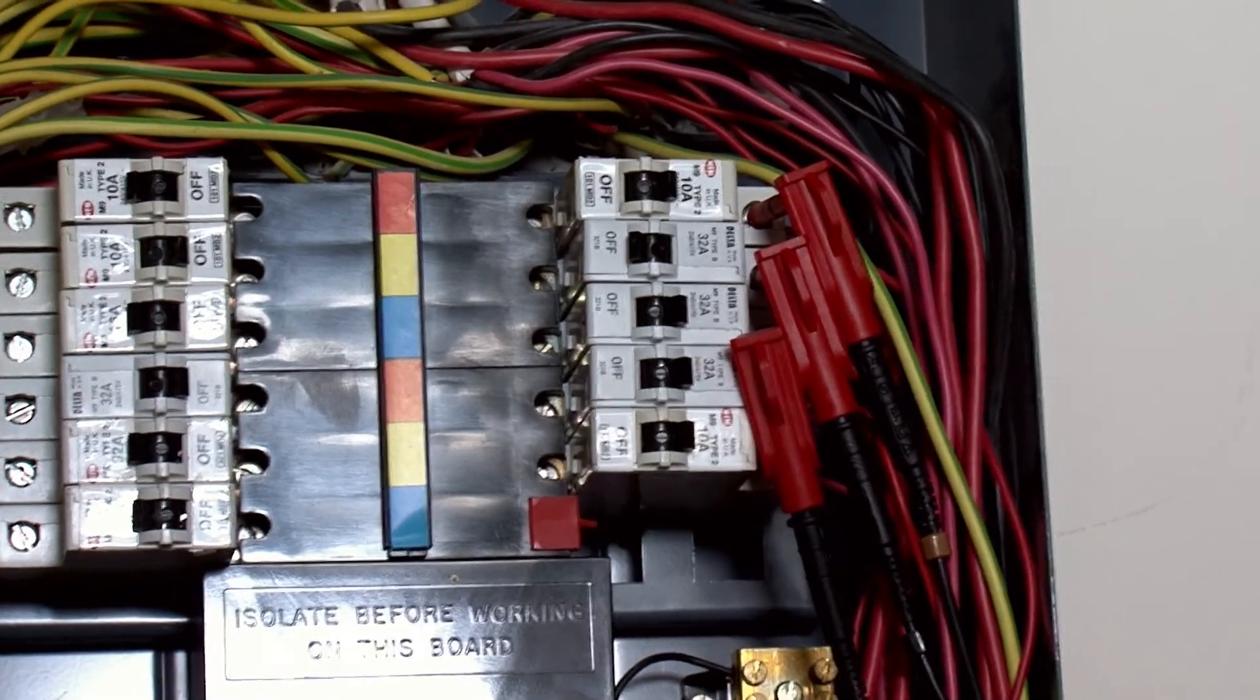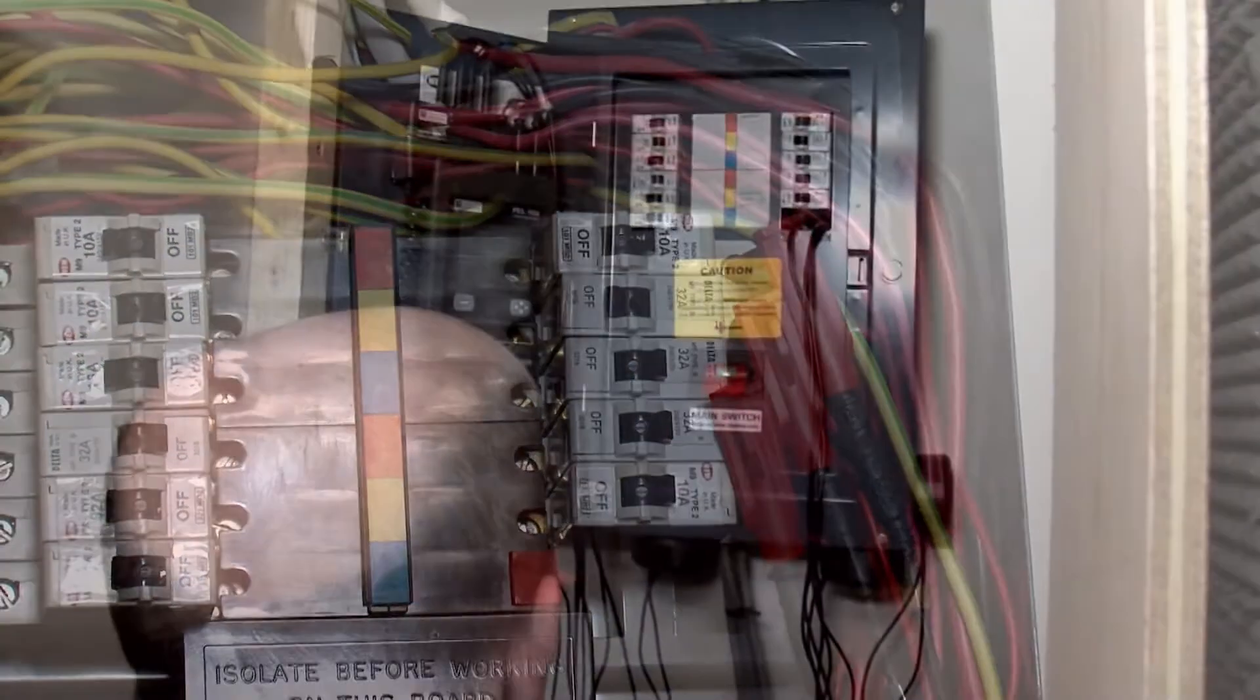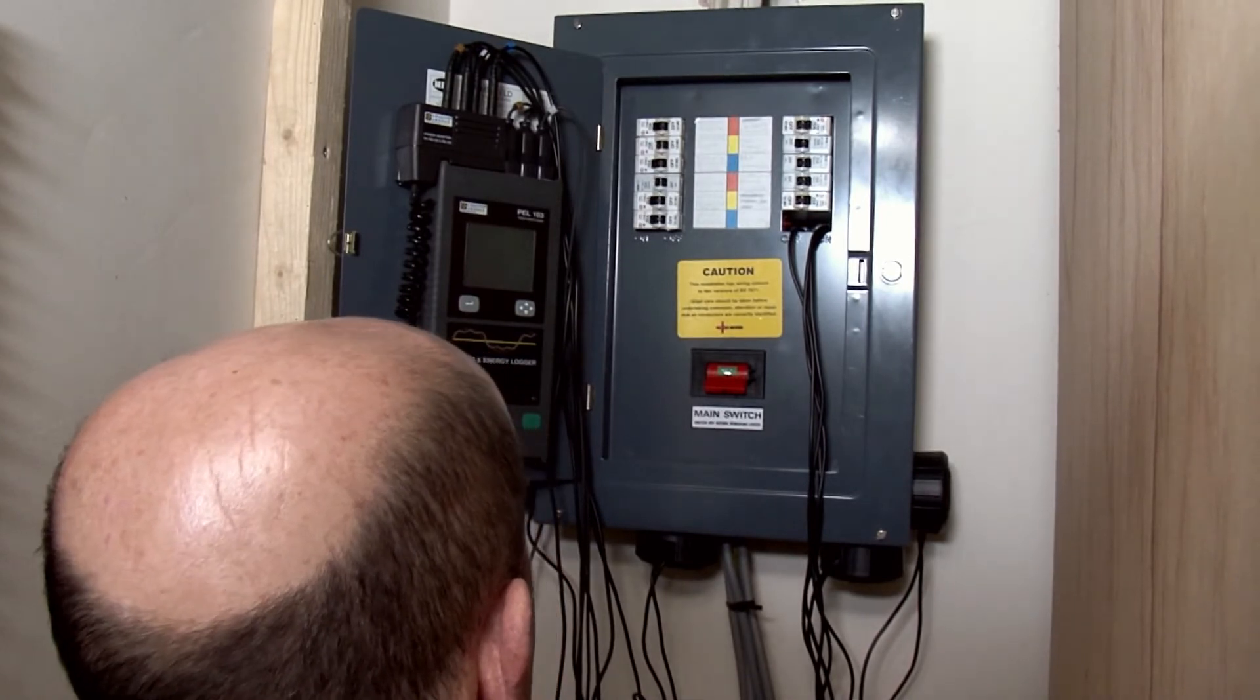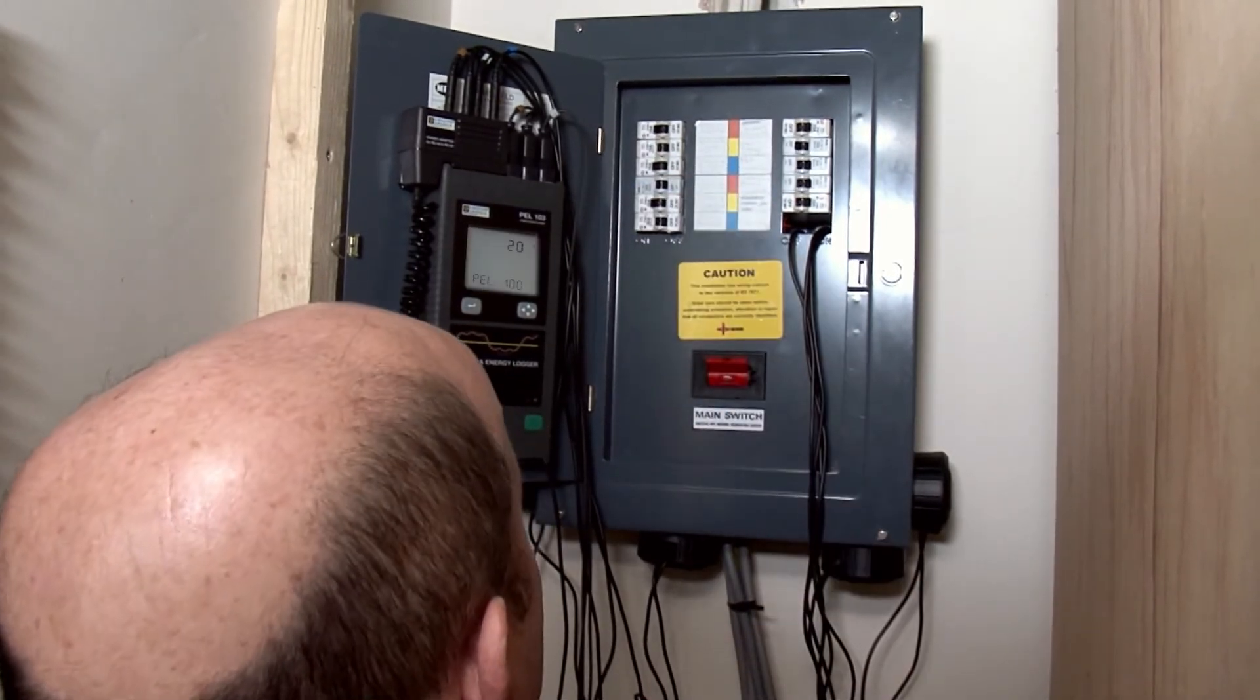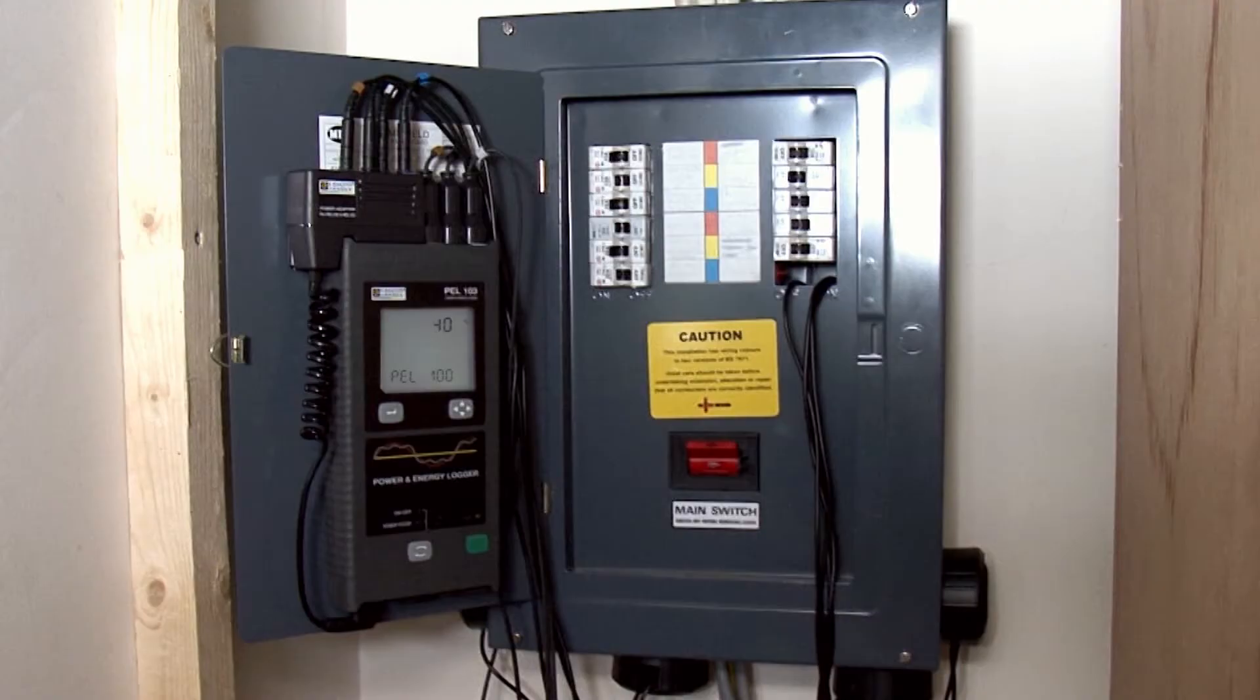Once that's done, the Pell 103 can be conveniently stuck somewhere with its magnetic back and that's it. It really is very simple. With the Pell 103 having been programmed to start and stop logging for a certain period, it can now simply be left to do its thing.